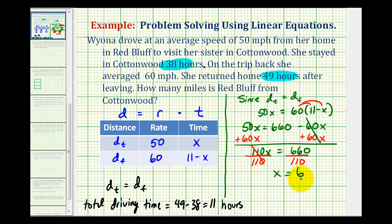Well if x equals 6, that means she spent 6 hours driving to Cottonwood. And then 11 minus 6 would be 5, so she spent 5 hours driving from Cottonwood back to Red Bluff.